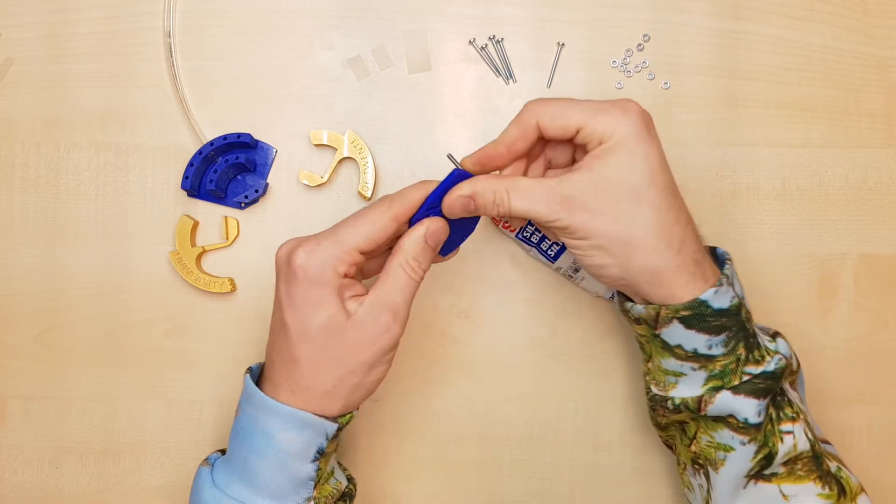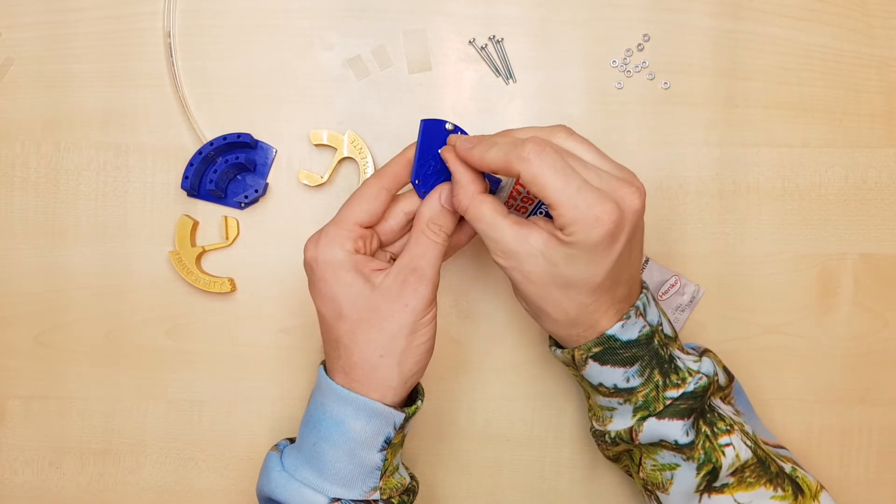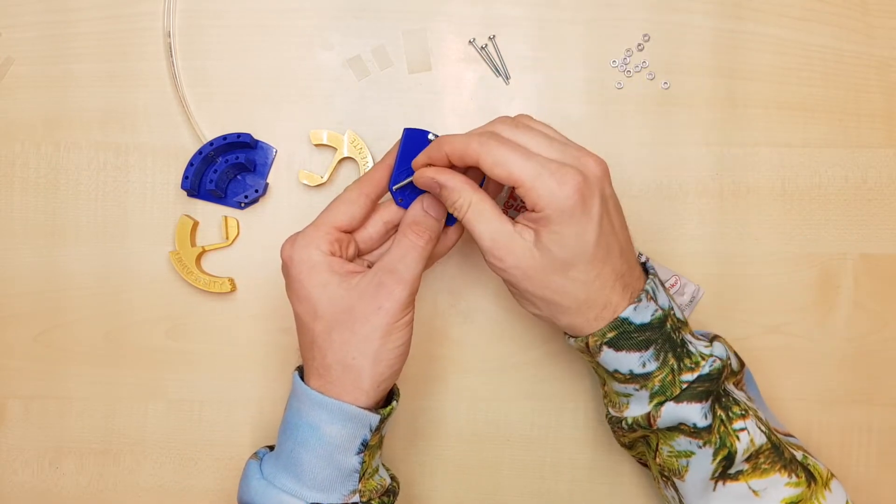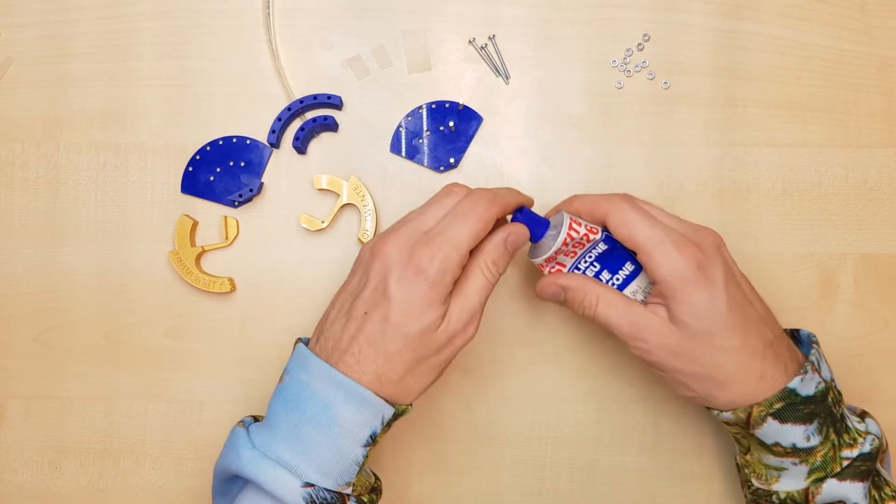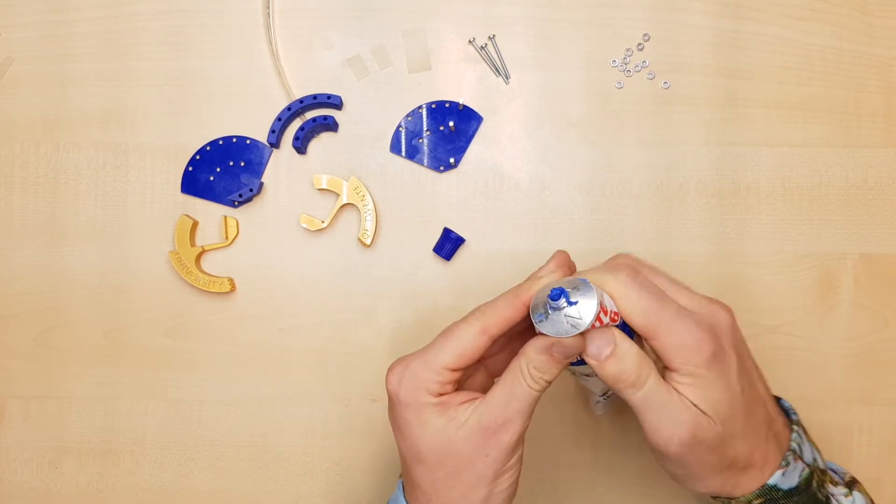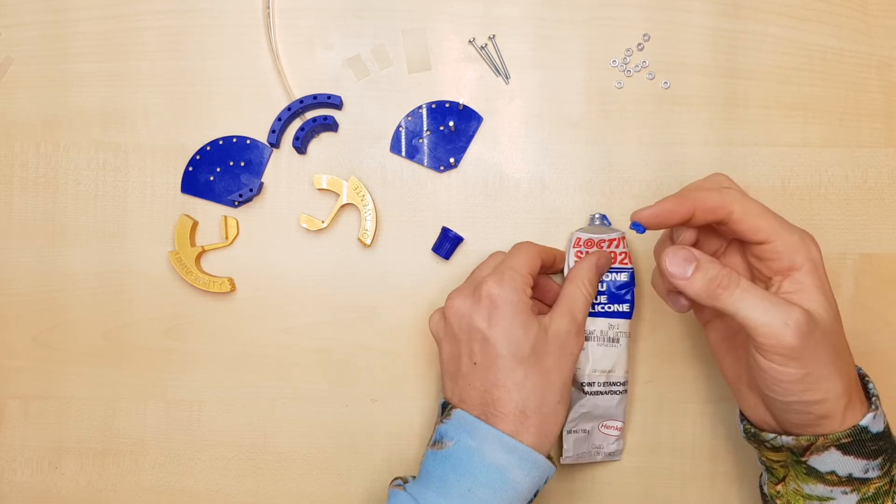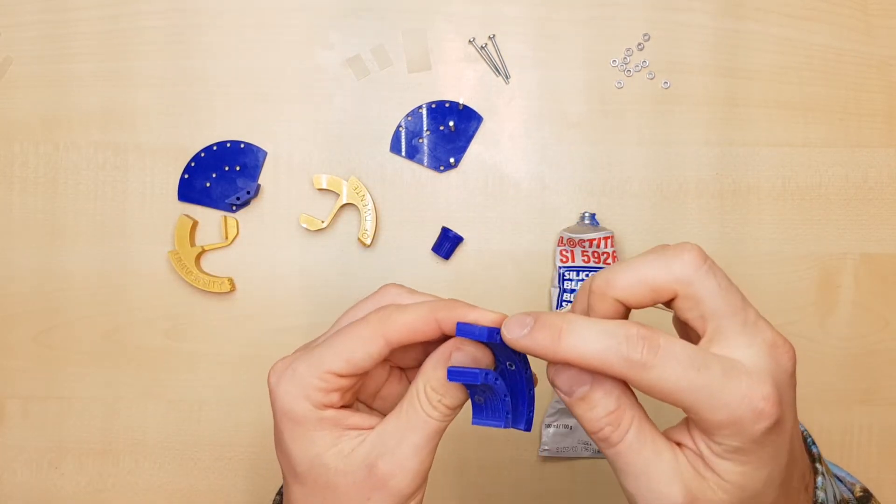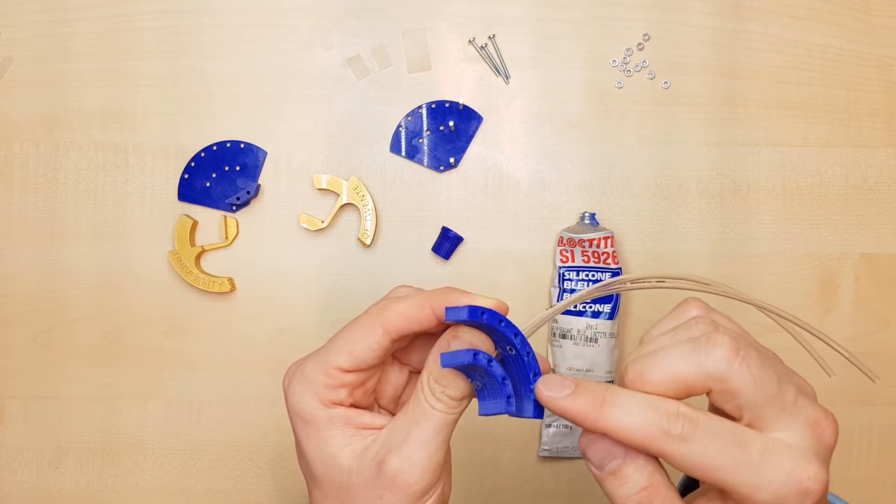The housing is assembled using nuts and bolts. Silicone seals the different parts of the housing. Just enough should be applied to ensure a good seal.